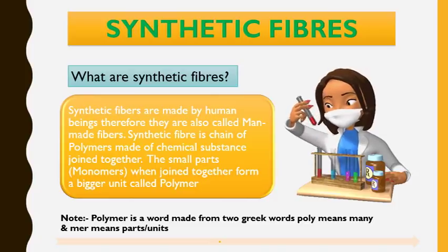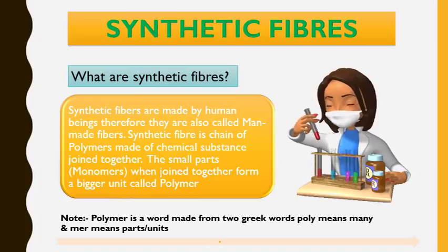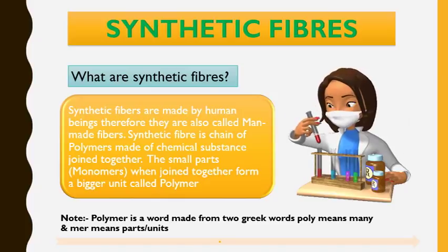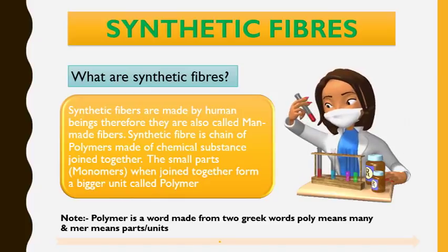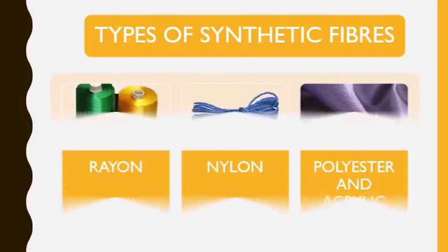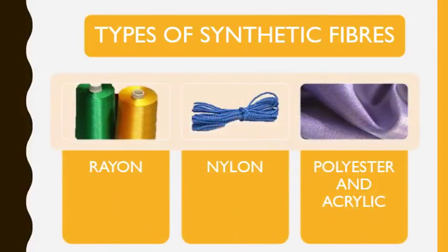The word polymer is derived from two Greek words — poly and mer. Poly means many and mer means parts or units. The synthetic fibers we are going to cover in this chapter are rayon, nylon, polyester, and acrylic.